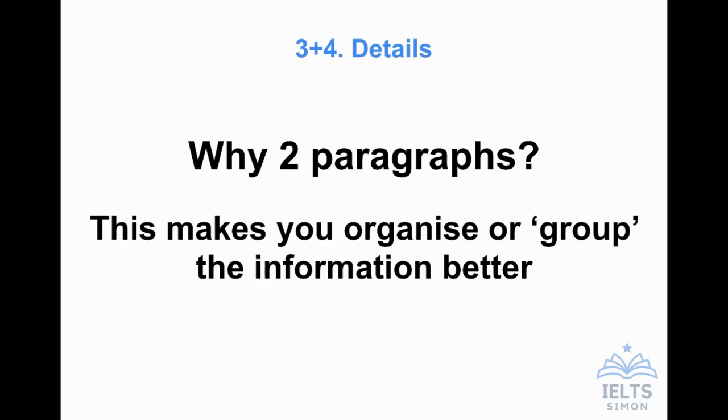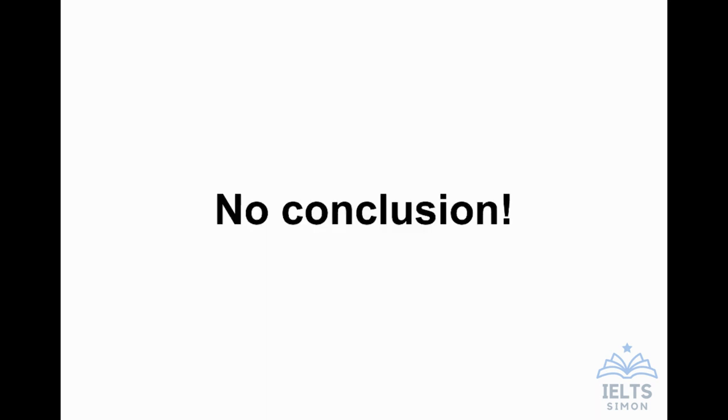Then finally, we have two paragraphs about the details. This is where you include numbers and you do your comparisons, your describing trends, if there are trends shown. Sometimes people ask me, why do we need two paragraphs? Well, the simple answer is this makes you organize or group the information better. If you can, for example, if you've got numbers, you might put all the higher numbers in one paragraph and the lower numbers in another. Or you might put the first half of the period in paragraph three and the second half of the period of years in paragraph four. Just grouping and organizing. This will help your score for coherence and cohesion makes your structure look better. And that's it. No conclusion, remember.